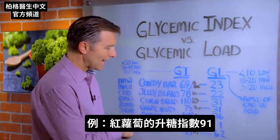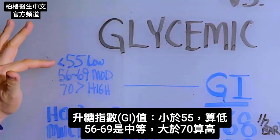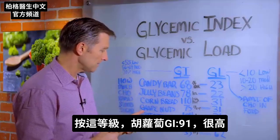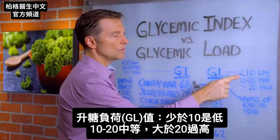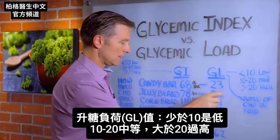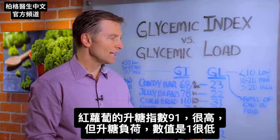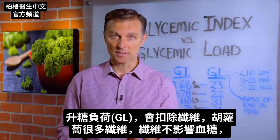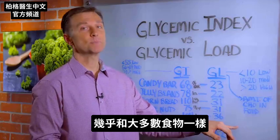Let me give you an example. A raw carrot is on the glycemic index 91. Now 55 or less is low, 56 to 69 is moderate, and over 70 is high. So according to this scale, the carrot would be high because it's 91. For the glycemic load, 10 or less is low, 10 to 20 is moderate, and greater than 20 is high. A raw carrot scores 91 on the glycemic index — pretty high — but look at the glycemic load: it has a factor of one. What we're doing with the glycemic load is deducting all the fiber. Carrots are very fibrous, so they're not going to influence your blood sugars nearly as much as most other foods.